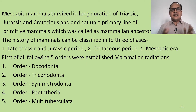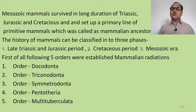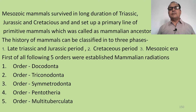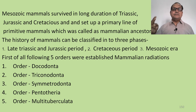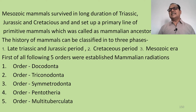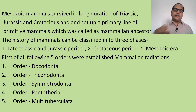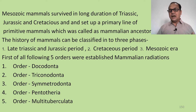Mesozoic mammals survived through the long duration of the Triassic, Jurassic, and Cretaceous to establish a primary line of primitive mammals called the mammalian ancestors. The history of mammals can be classified into three phases. In the first phase — the late Triassic to Jurassic period — five orders were established: order Docodonta, order Triconodonta, order Symmetrodonta, order Pantotheria, and order Multituberculata.